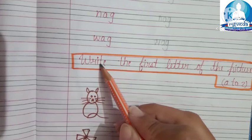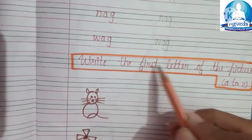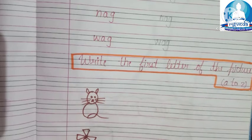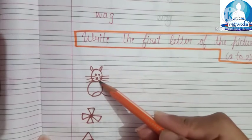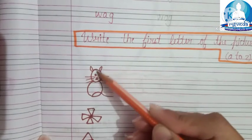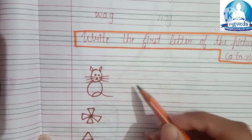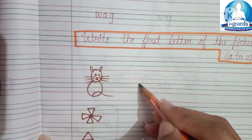Now our next work is write the first letter of the picture. So our first picture is, tell me what is this? Cat. So here we will write the first letter. Cat.